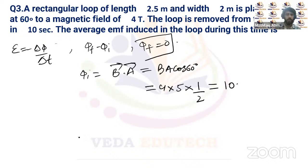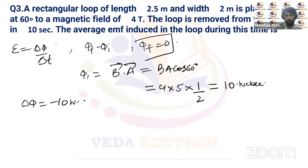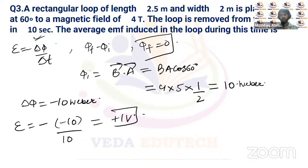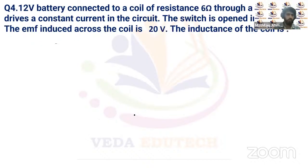Change in flux = 0 − 10 = −10 Weber. Induced EMF = −ΔΦ/Δt = −(−10)/10 = +1 volt. So the average induced EMF in the loop during this time is 1 volt.